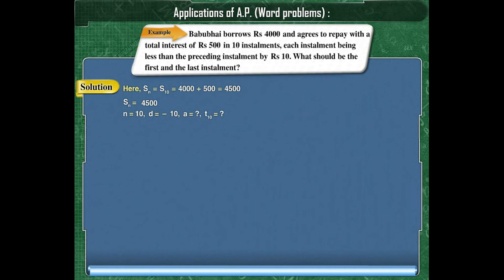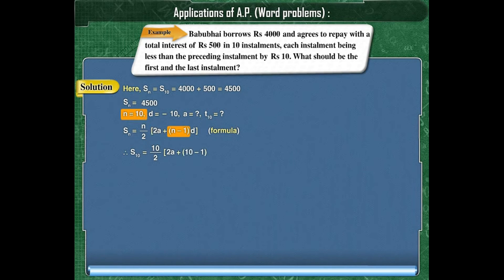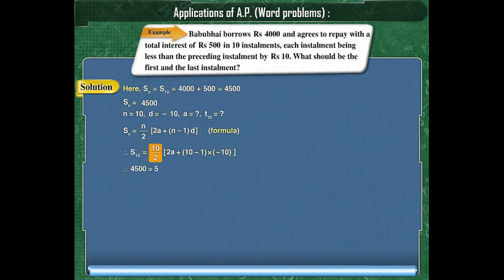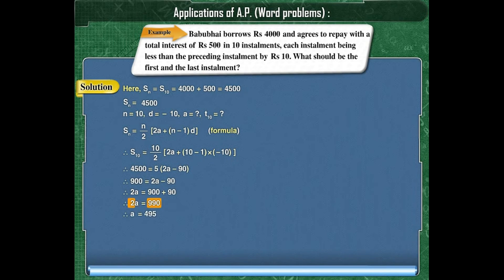We know the formula SN = N/2 × (2A + (N − 1) × D). Substituting the values of N and D, we get S10 = 10/2 × (2A + (10 − 1) × (−10)). Since S10 = 4,500, we get 4,500 = 5 × (2A − 90). On simplifying, we get A = 495.